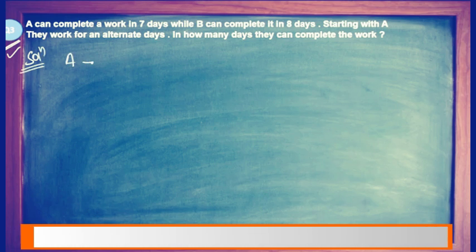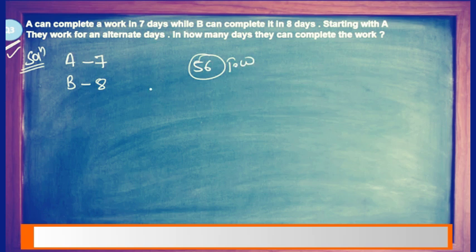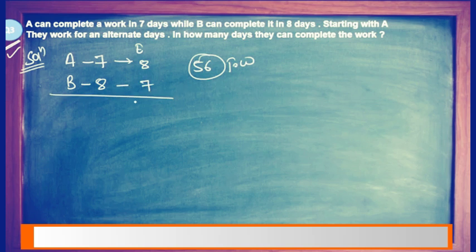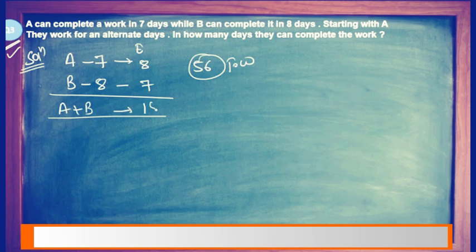A is taking 7 days and B is taking 8 days. So what will be the LCM? It will be 56 — that will be the total work. So the efficiency of A will be 8 and the efficiency of B will be 7. Their combined efficiency A plus B will be 7 plus 8, that is 15.